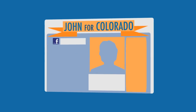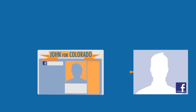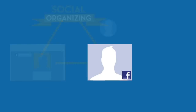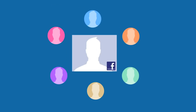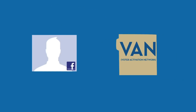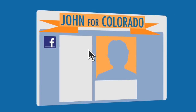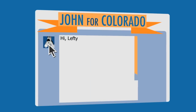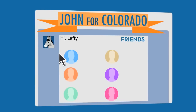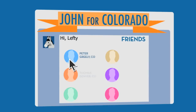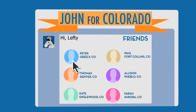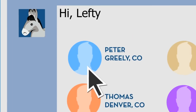When supporters log on to a campaign website using their Facebook credentials, Social Organizing helps them match their Facebook friends to voters in the VAN. For example, let's say you're running a campaign in Colorado — when supporters log on through the campaign's website, Social Organizing will help them find friends who live in Colorado and are registered voters. It also asks them how they know each voter.